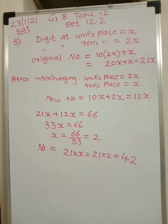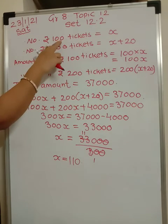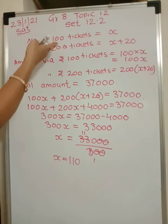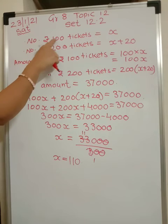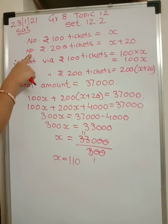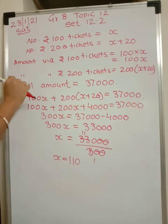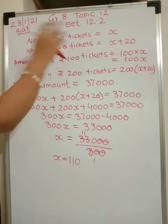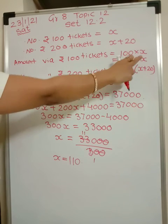Now the sixth problem. Some tickets of Rs.100 and Rs.200 were sold, but the number of Rs.200 tickets sold were more than Rs.100 tickets by 20. Let the number of Rs.100 tickets sold be x; then the number of Rs.200 tickets sold would be x plus 20. The amount received from Rs.100 tickets is 100x.